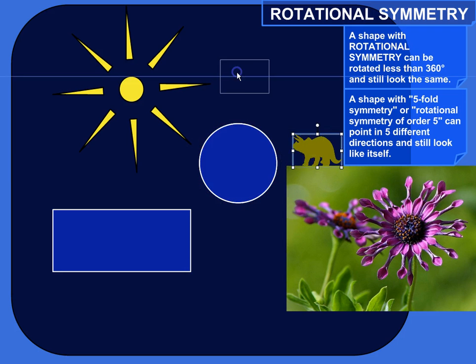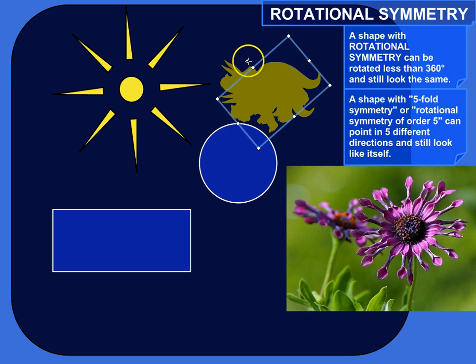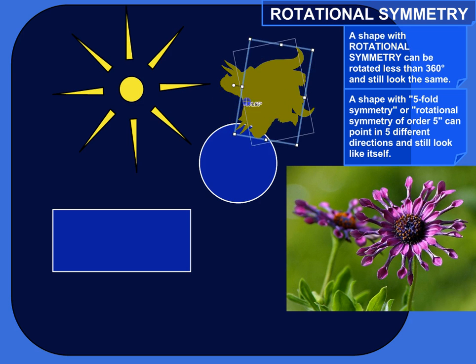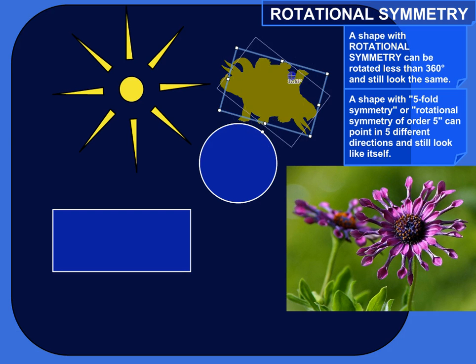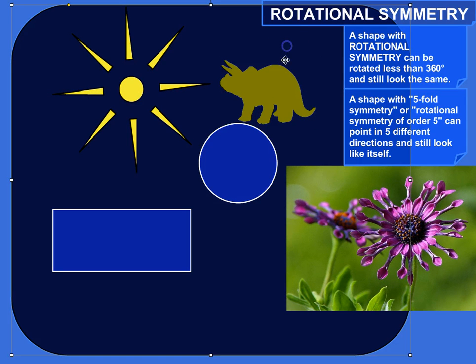But what about if I took something weird-looking like a Triceratops? Does he have rotational symmetry? Is there any angle I can rotate him where he lines up exactly with himself? No. He doesn't line up exactly with himself until I do a complete circle, a complete 360, back to where he started. So he does not have rotational symmetry.